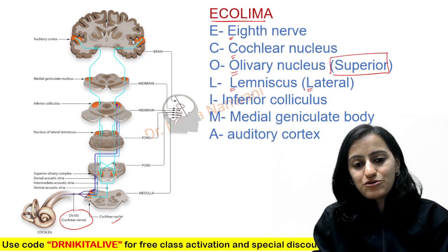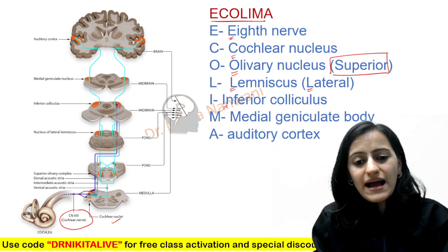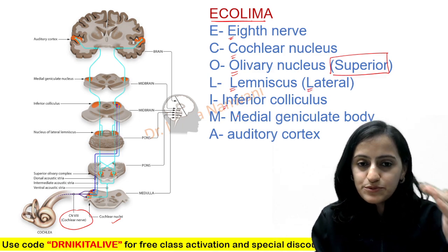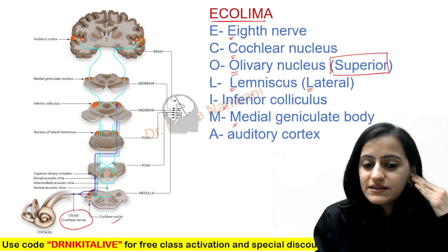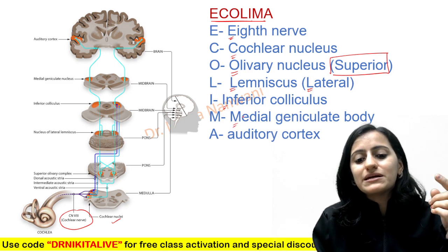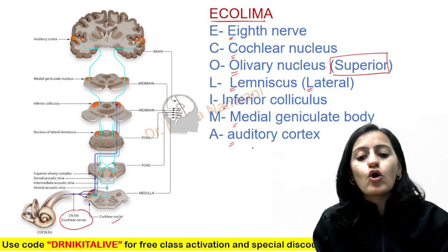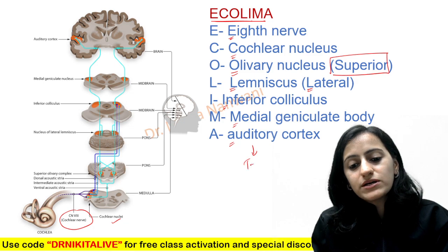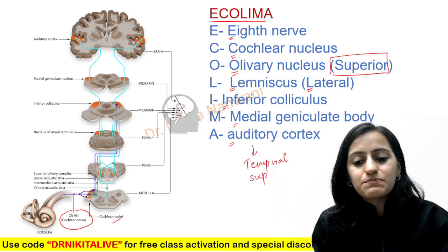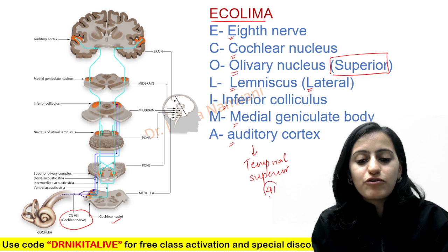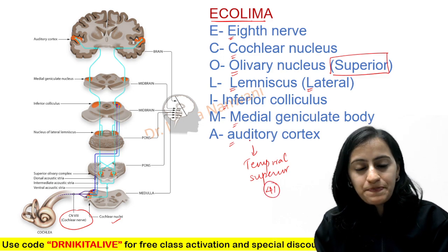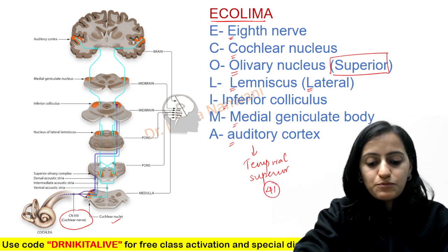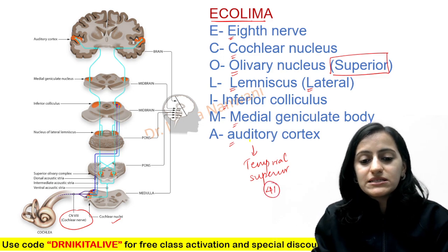I is the inferior colliculus, M is the medial geniculate body, and A is the auditory cortex, which is located in the temporal lobe — the superior temporal gyrus, Brodmann's area 41.